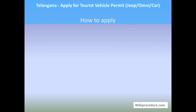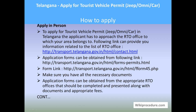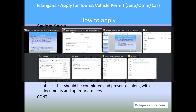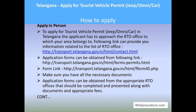These are the documents required for this permit — apply in person. To apply for a tourist vehicle permit (jeep, omni, or car) in Telangana, one has to reach the area RTO office. You can find the RTO office through the link provided below, which leads to the Telangana State Government portal where you can see the contact page and select the respective contact details for your area. Application forms can be downloaded from the general form downloadable link, and the specific Form 45 link is also given. Make sure you have all the documents in order to apply, because missing even one document will result in a rejected application.